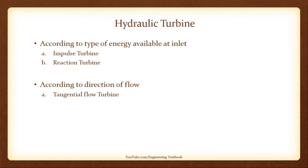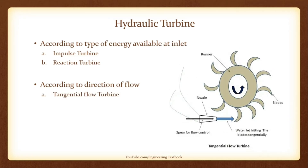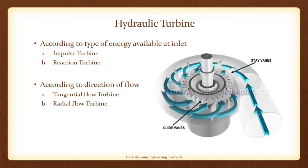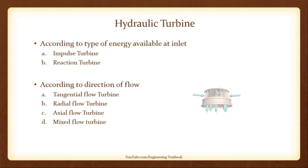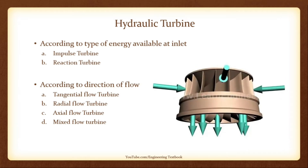According to direction of flow: If water flows along the tangent of the runner, the turbine is known as a tangential flow turbine — for example, the Pelton turbine. If water flows in a radial direction through the runner, it is called a radial flow turbine. If water flows through the runner parallel to the axis of rotation, it is an axial flow turbine. If water enters in a radial direction but leaves parallel to the axis of rotation, it is called a mixed flow turbine — for example, the Kaplan turbine.